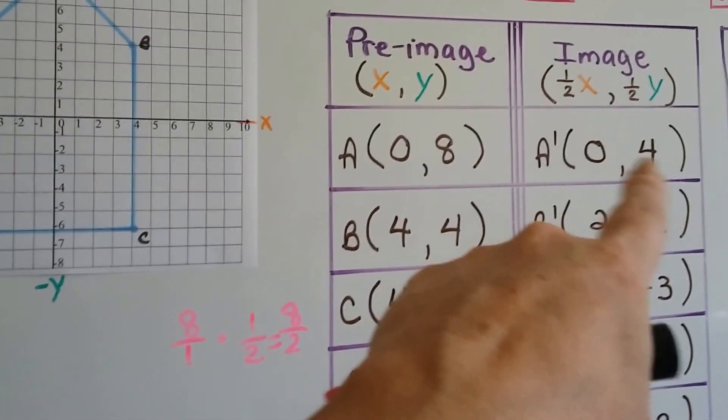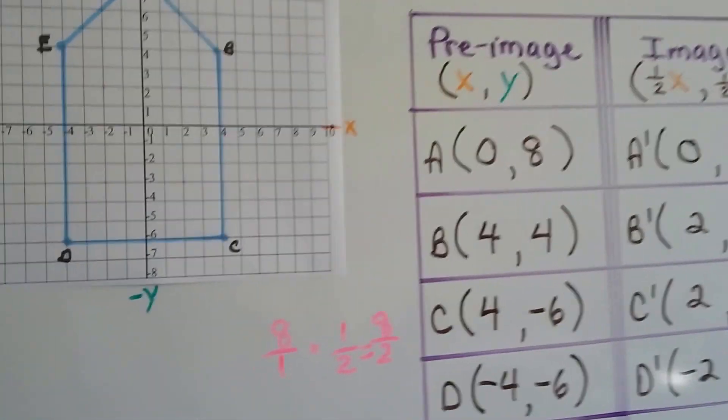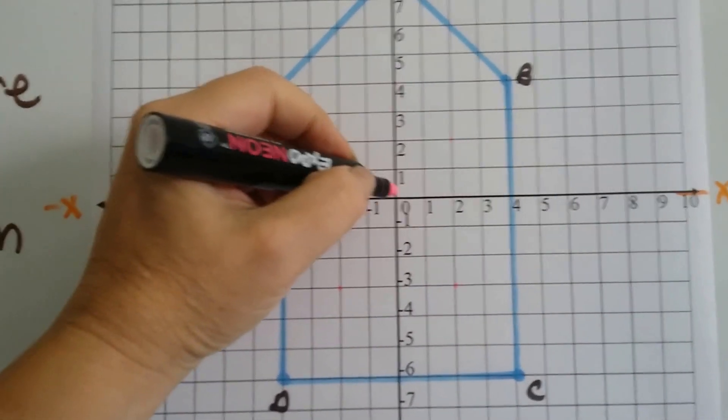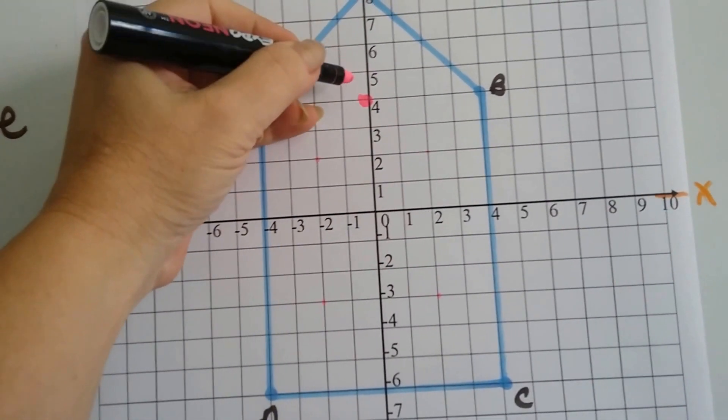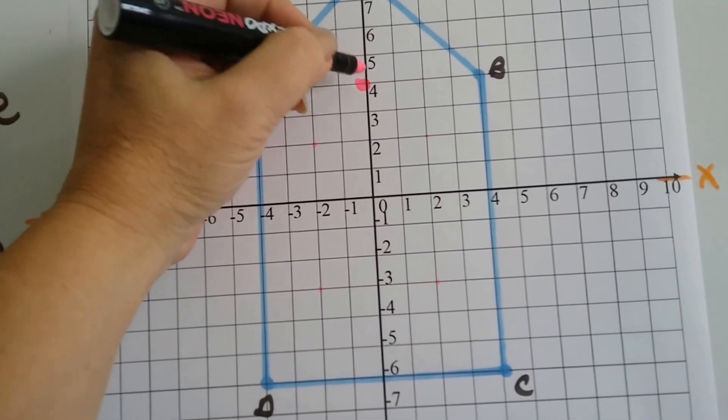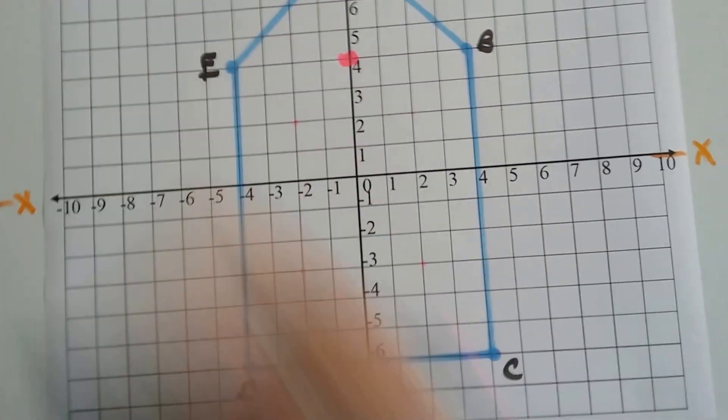So we know that a prime is going to be at 0, 4, because that's half of 0, 8. So 0, 4 is going to be right here. That's our new place for a prime.